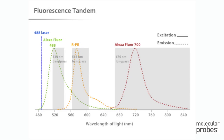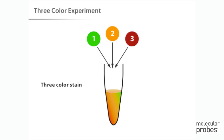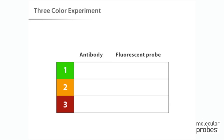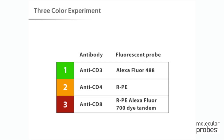The utility of a tandem can be seen when we consider the emission profiles of the fluorophores chosen for our three-color experiment. To illustrate the different data analysis concepts covered so far, the next few slides will take you through the basic steps of a typical three-color experiment. We will stain a human peripheral blood cell sample with a combination of three fluorescent probes: an anti-CD3 antibody labeled with Alexa Fluor 488 dye, an anti-CD4 antibody labeled with RPE, and an anti-CD8 antibody labeled with an RPE–Alexa Fluor 700 dye tandem.